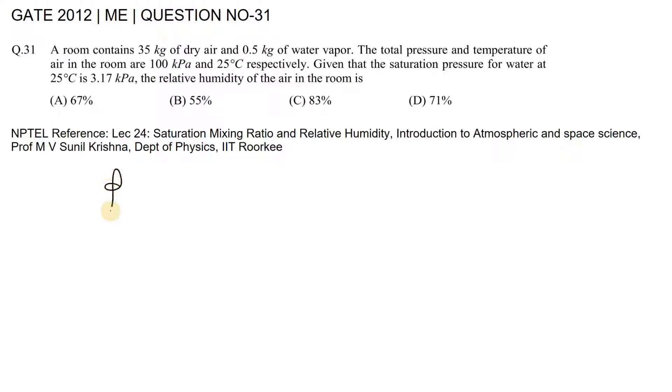Relative humidity is represented by phi and is given by the ratio of mass of vapor to mass of saturated vapor, mv over m-vs. This equals vapor pressure divided by vapor pressure at saturation, Pv over Pvs.